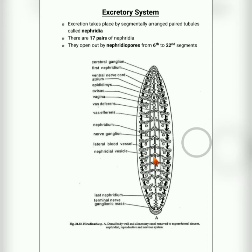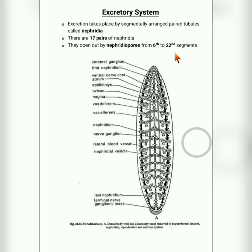In total, 17 pairs of nephridia are found from the 6th to the 22nd segment, and they open to the exterior by nephridiopores. Nephridia is the main excretory organ in the excretory system of leech. Learn these thoroughly. Thank you, have a nice day.